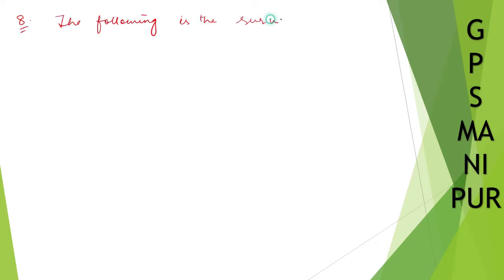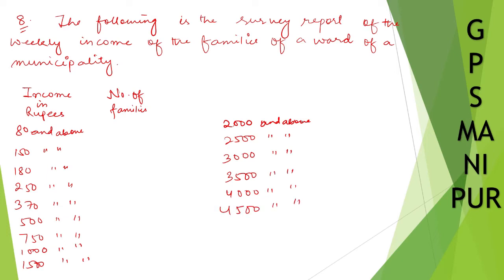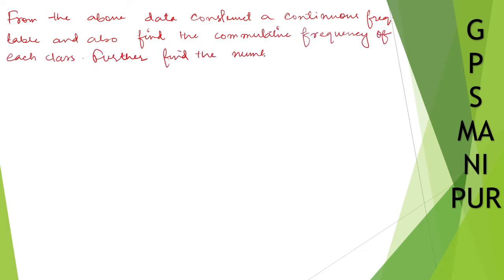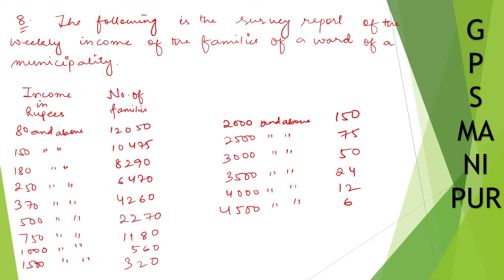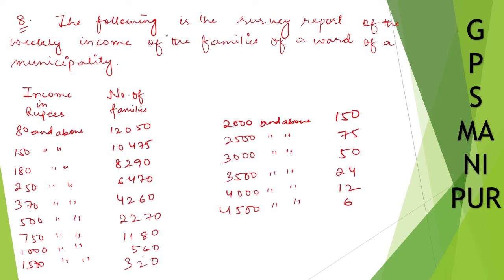Now we are doing exercise 14.1, question number 8. The question says: the survey report of the weekly income of the families of a ward of a municipality. Income is given in rupees along with the number of families. The question asks us to construct a continuous frequency table from the above data, and also find the cumulative frequency of each class.